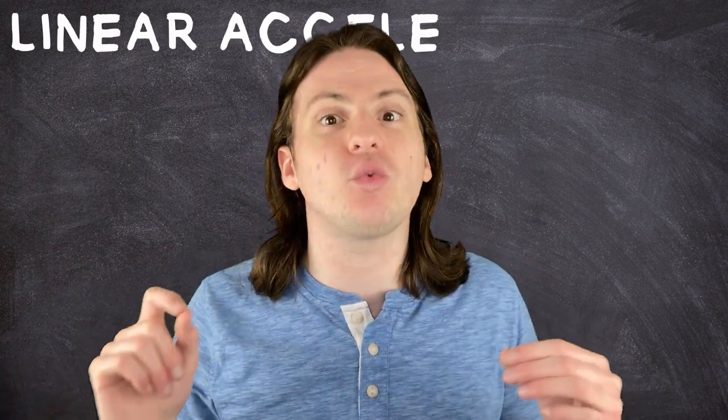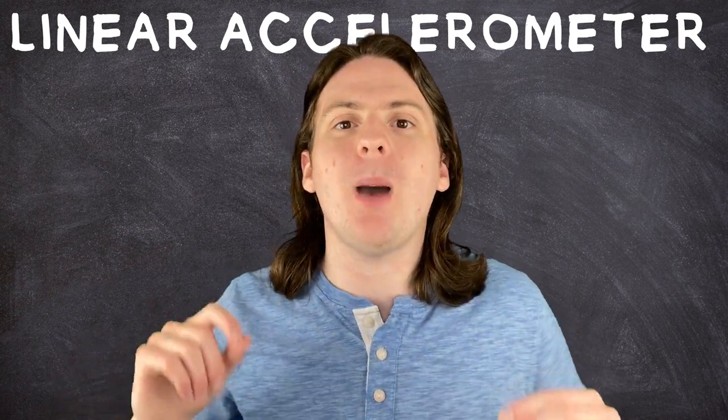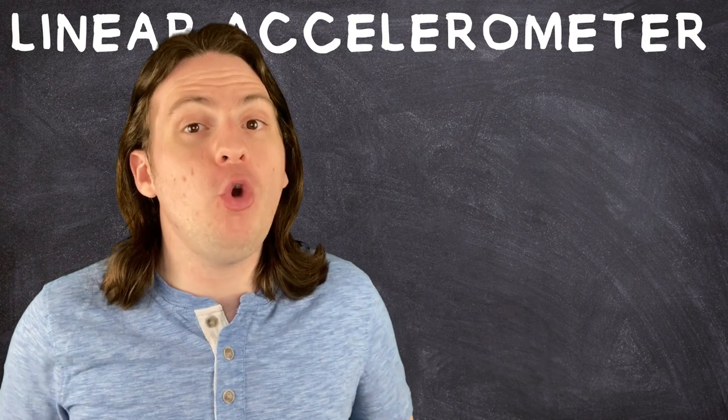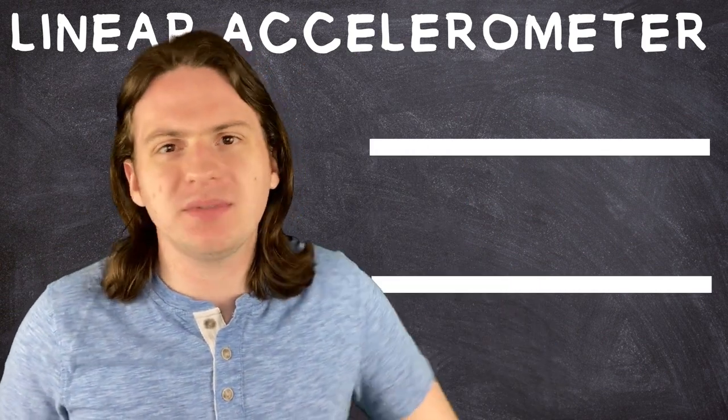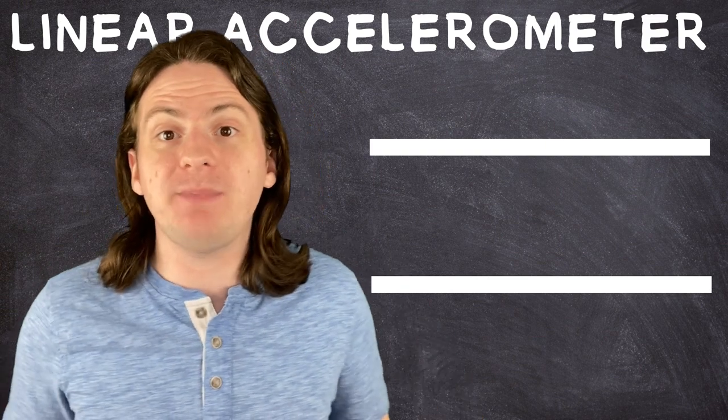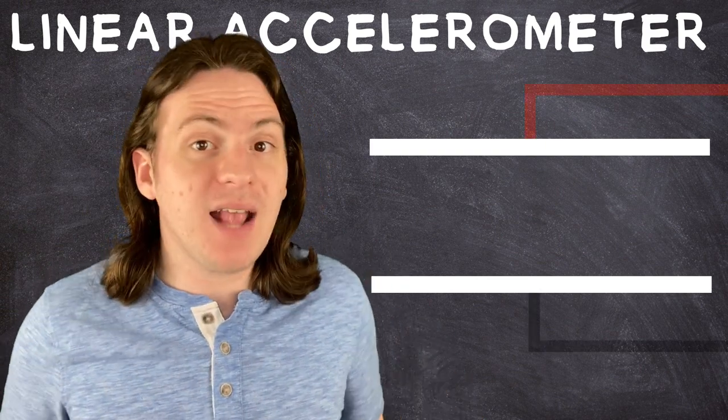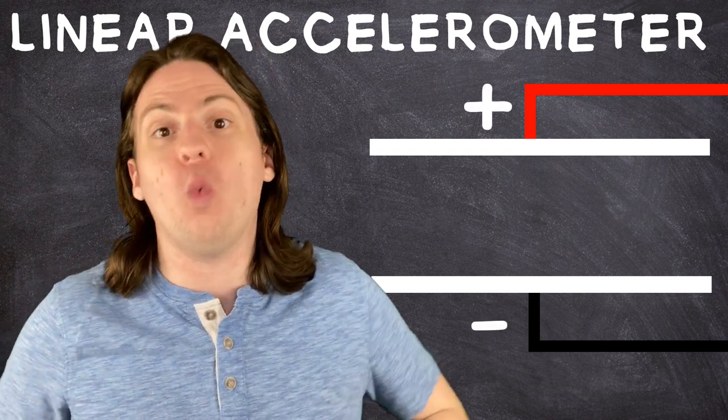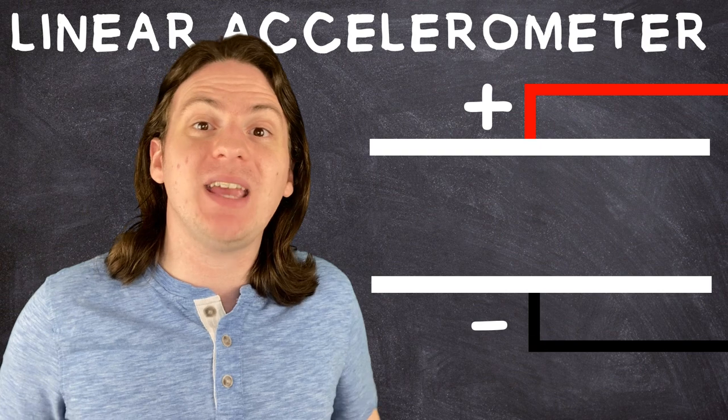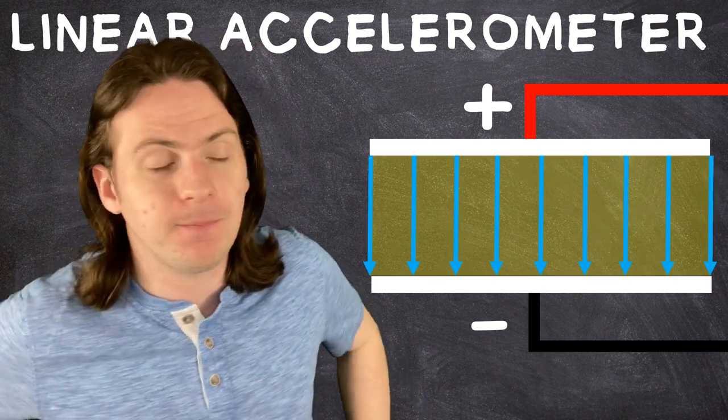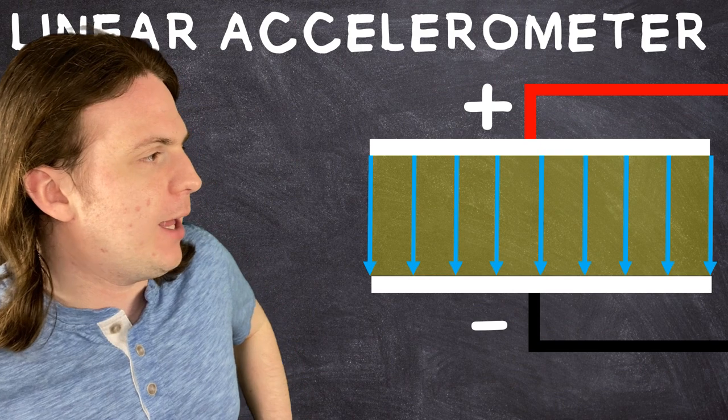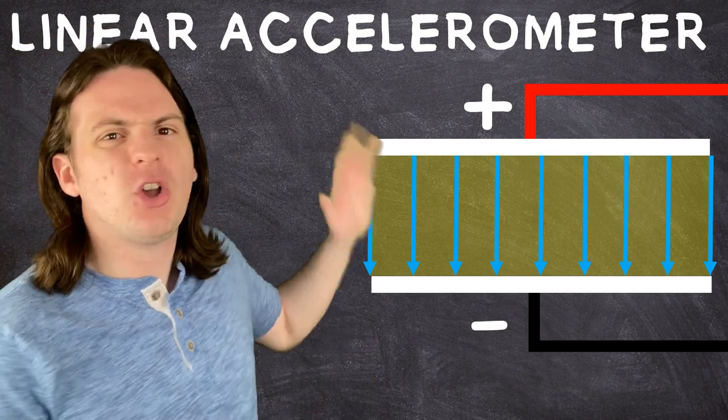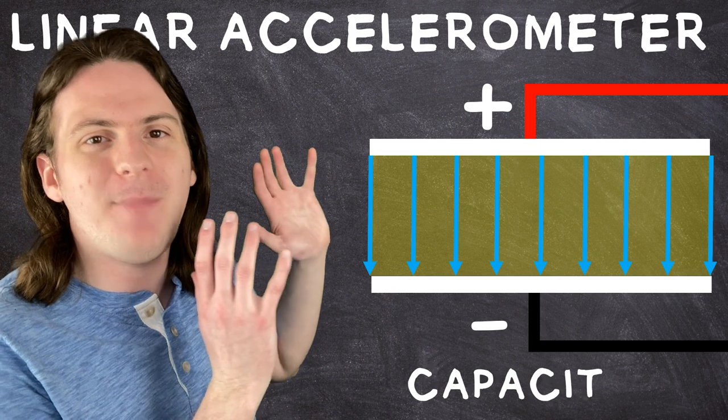Let's start with the first of the two systems, the linear accelerometer. To understand how this works, though, we first need to understand a little thing called a capacitor. When you have two parallel plates of some conductive material, like some type of metal, with empty space in between, and you connect these two plates to a circuit and power it, a charge builds up on one of the plates. This creates an electric field between the two plates, because this one might actually be magic. This whole situation here is what we call capacitance.